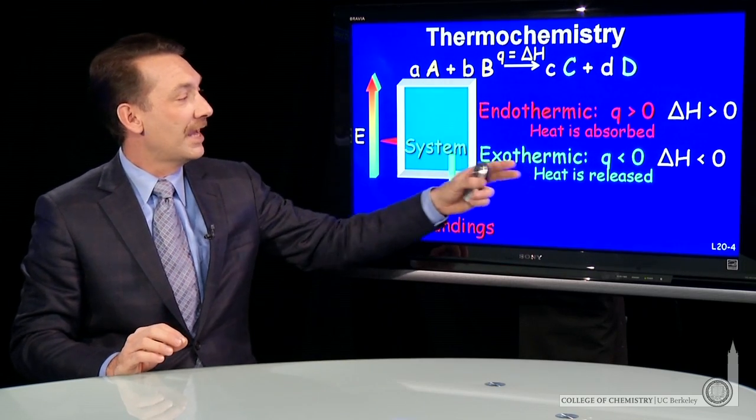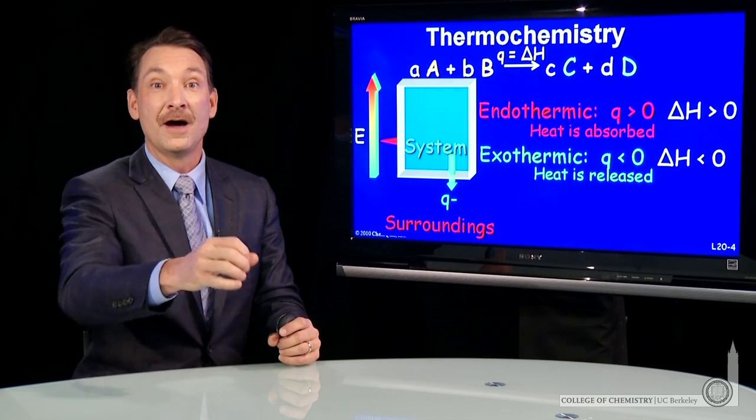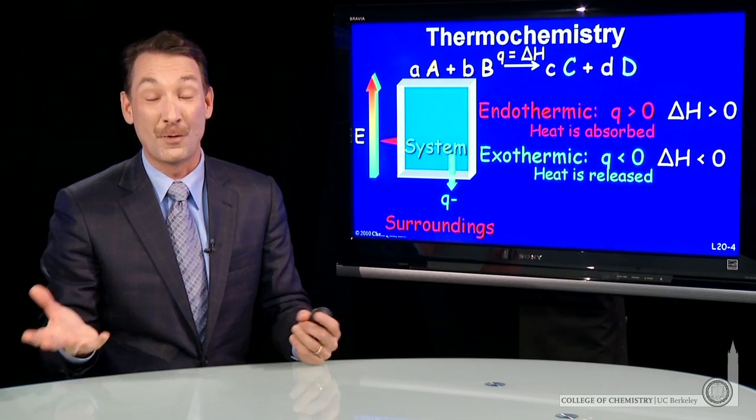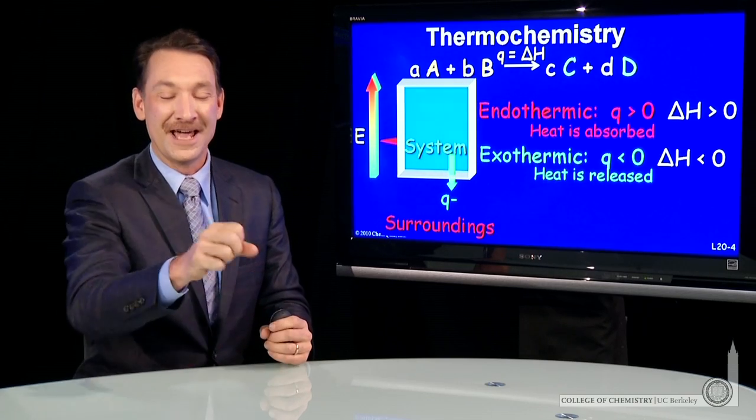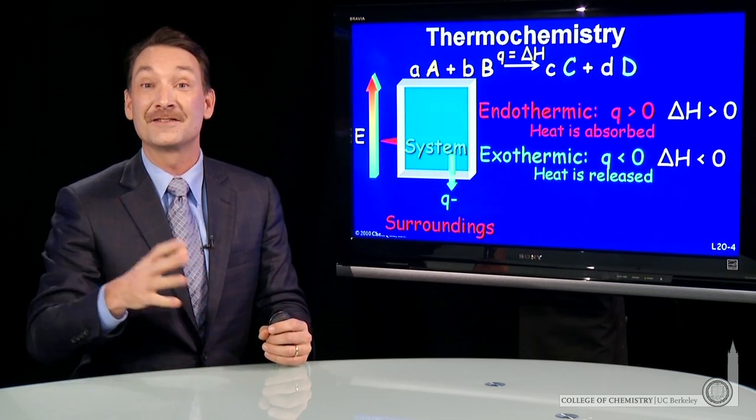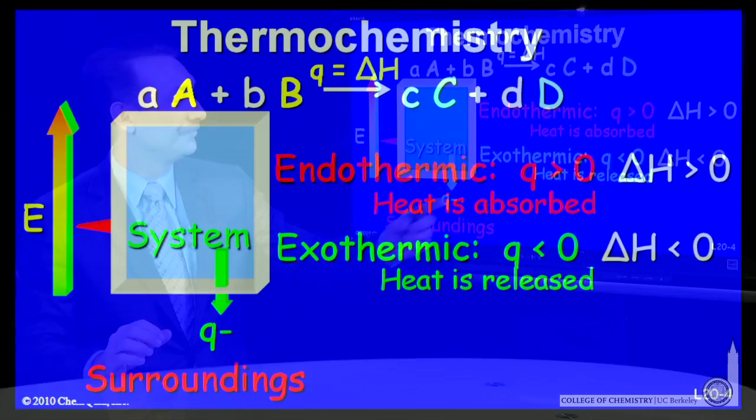Exothermic processes, where heat flows out of the system, are often more interesting to watch because the energy ends up in the surroundings. Energy coming out of the system into the surroundings is often more dramatic—there's often an explosion, for instance.